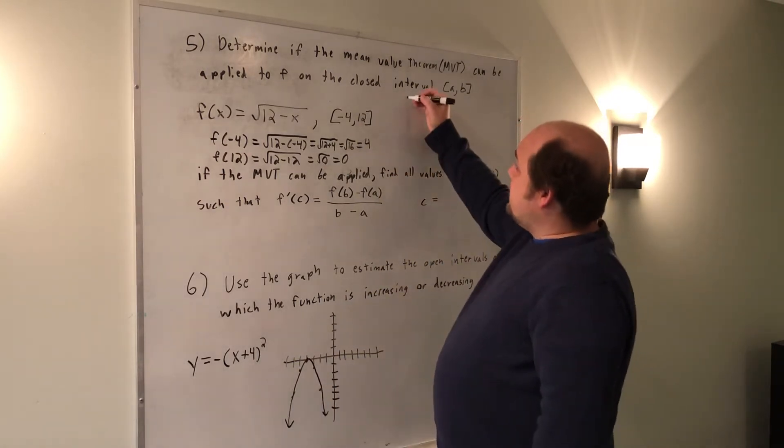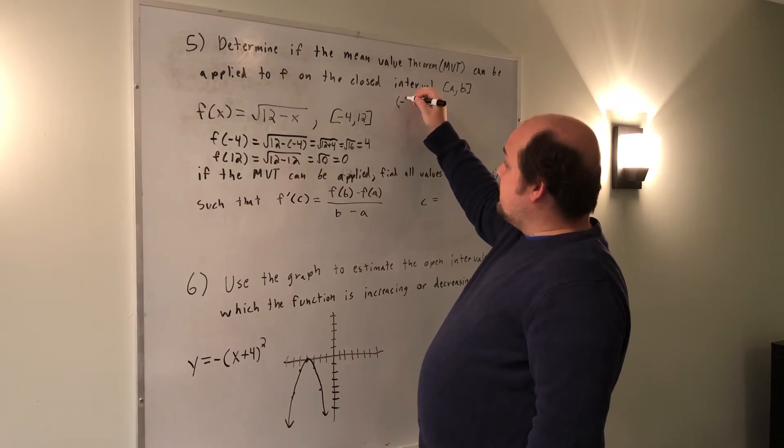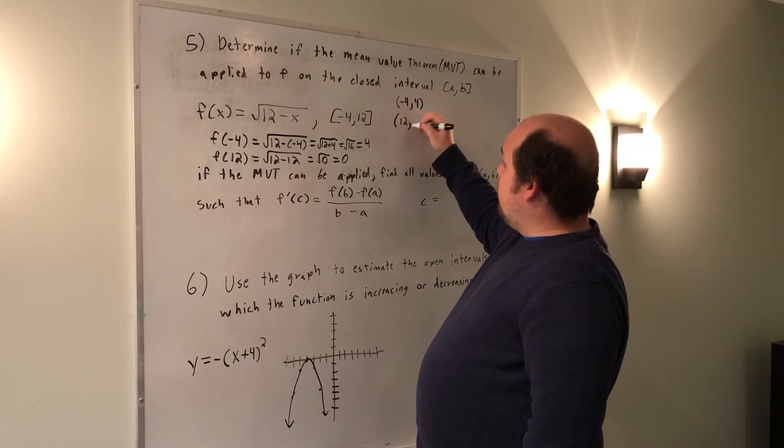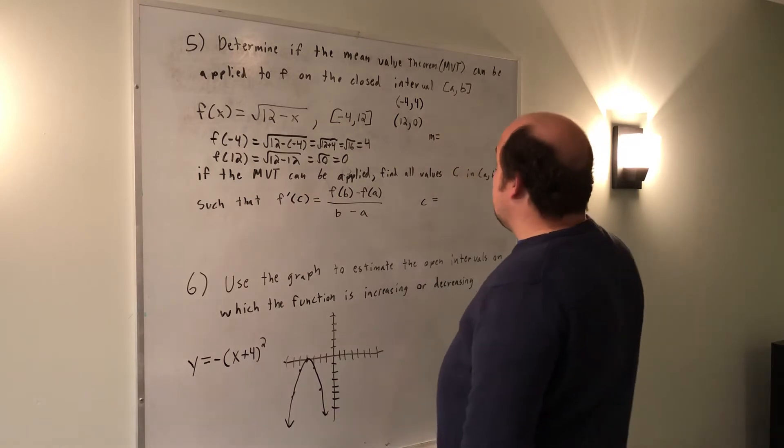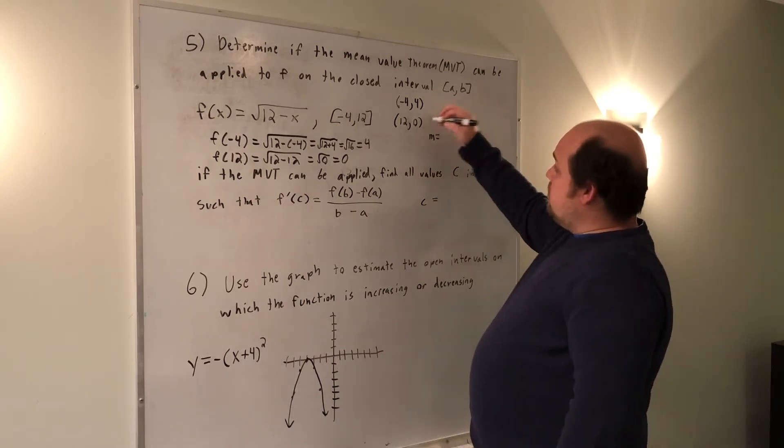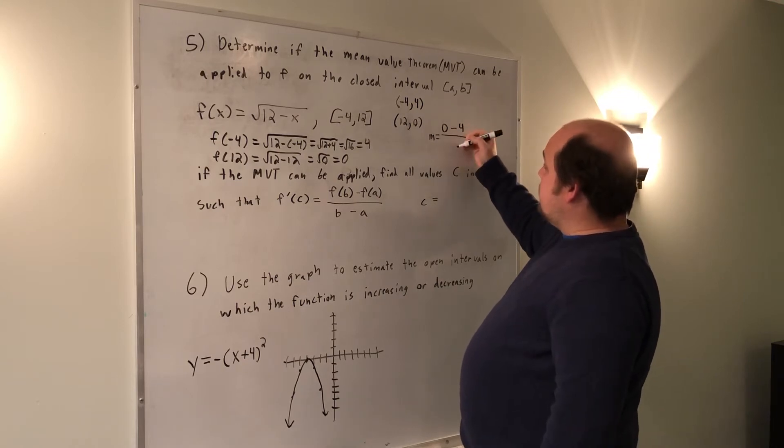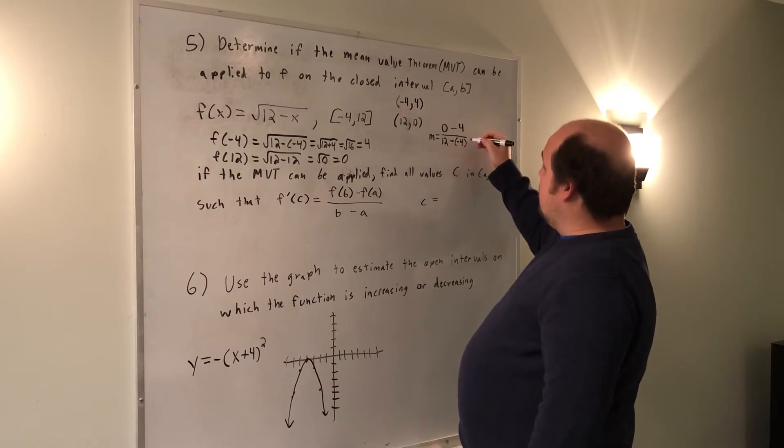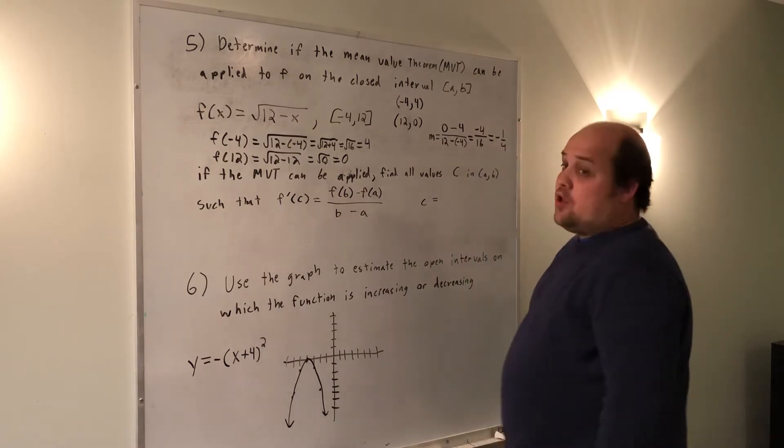So I found that the endpoints have coordinates x equals negative 4, y equals 4, and x equals 12, y equals 0. I can now find the slope guaranteed by the MVT by doing y2, 0, minus y1, 4, over x2, 12, minus x1, negative 4. On top, I get negative 4. On bottom, I get 16. So negative 1 fourth is the slope that I'm guaranteed.